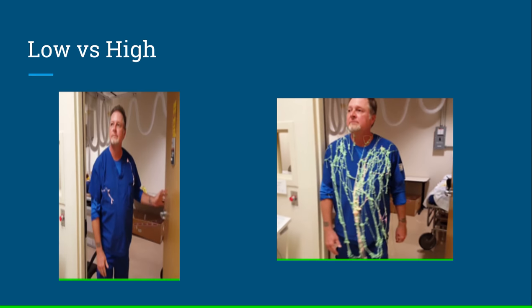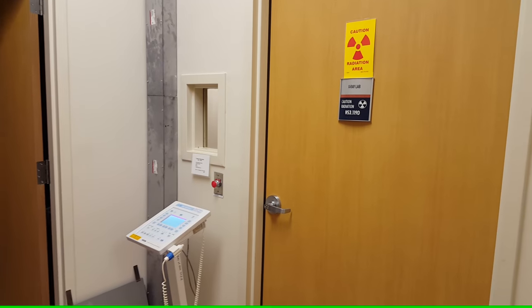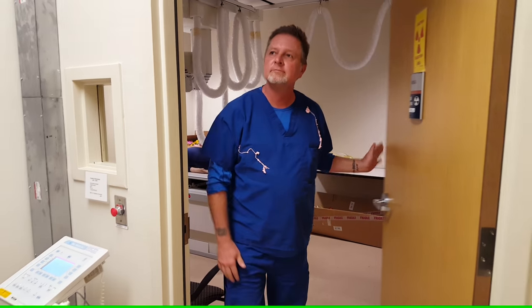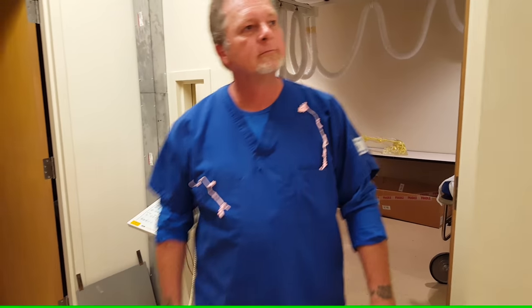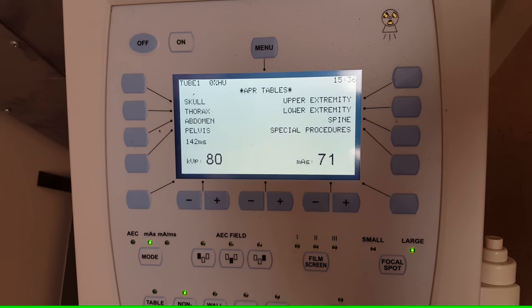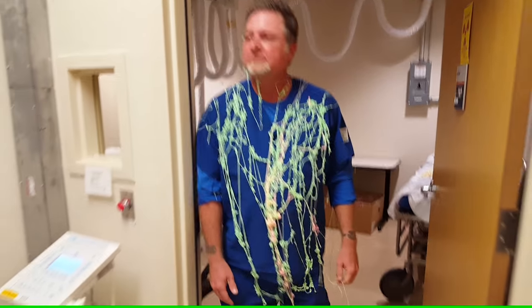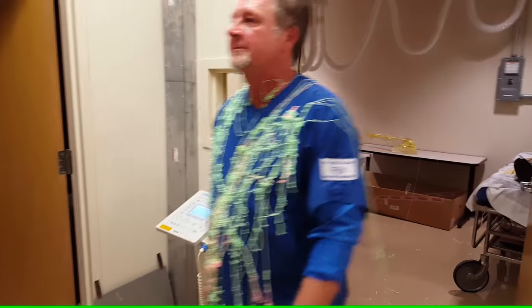This video demonstration provides a visual understanding of the amount of scatter produced when low KVP is used compared to when high KVP is used. When KVP is set at 60, the patient dose will be relatively low. As the patient walks out of the exam, the amount of scatter can be seen on his shirt. When KVP is increased to 80, the amount of scatter will also increase. As the patient walks out of this exam, it is apparent that the amount of scatter hitting the patient has increased.